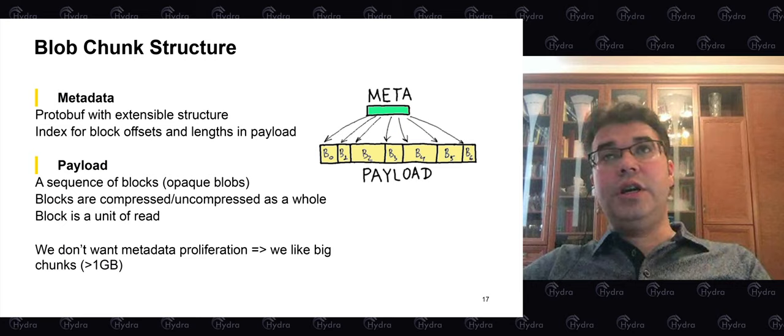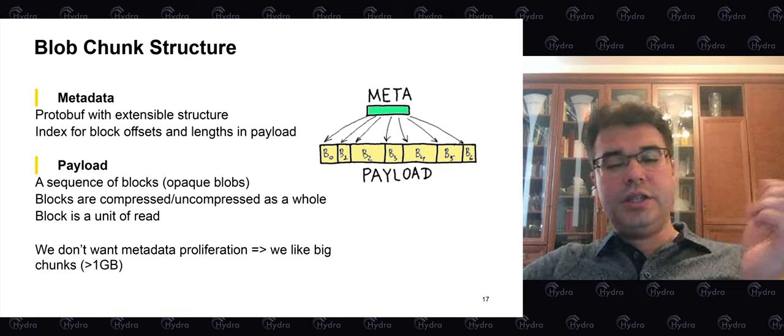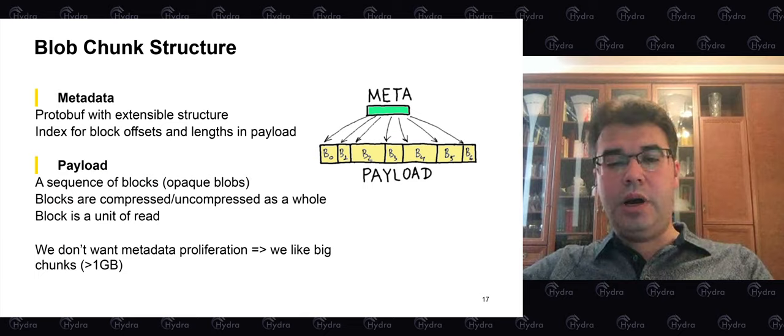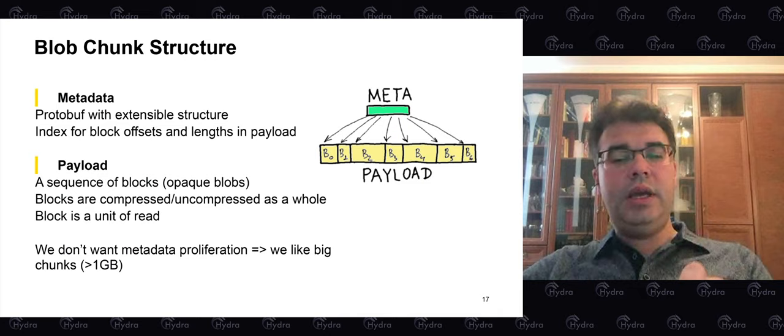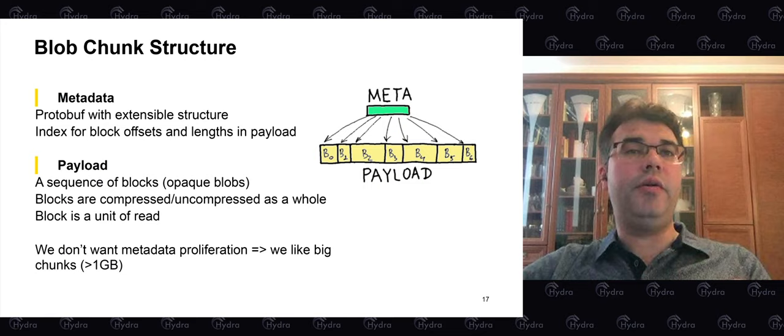Now let's discuss chunk structure. Chunks are not just solid blobs — they are logically partitioned into blocks, with a separate metadata part describing the chunk content and containing pointers to individual blocks acting as a local index. The block is the unit of write and read operations. Chunks typically contain compressed data, so chunk blocks act as compression blocks for the respective compression algorithms.